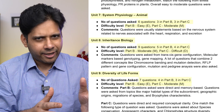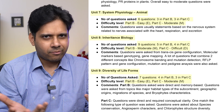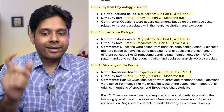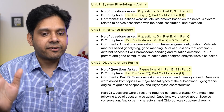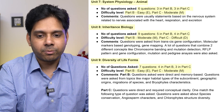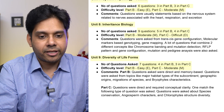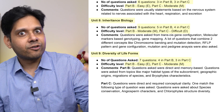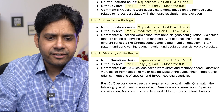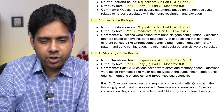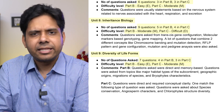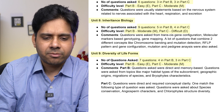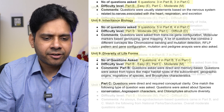For Unit 8, Inheritance Biology, Part B questions were not that difficult, but our experts found Part C questions to be really difficult. You have to prepare inheritance biology thoroughly. Unit 9, Diversity of Life Forms, had seven questions — four in Part B and three in Part C. Part B was easy and Part C was moderate.